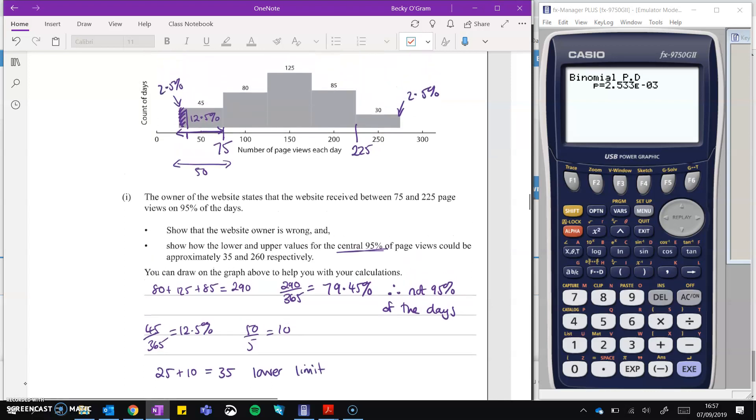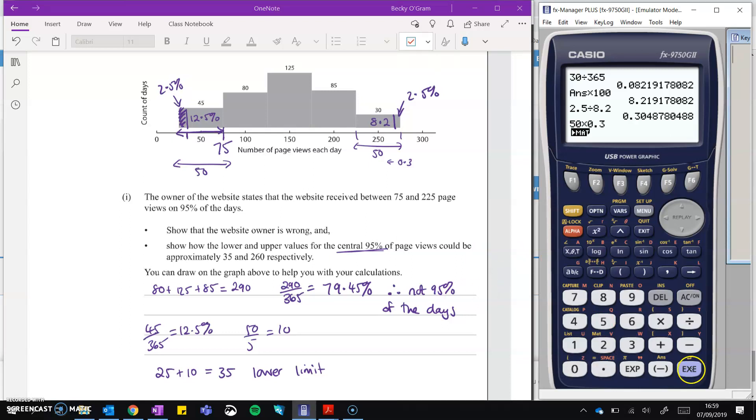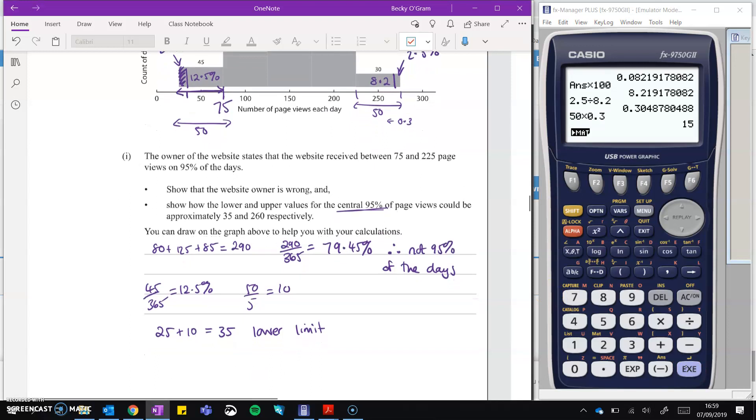We'll go and do a similar thing at the top end. So 30 days out of 365 gives us a percentage of 8.2. So this whole block is worth 8.2. And we want to slice off 2.5% of 8.2. So if we think in proportions again, 2.5 out of 8.2 is roughly 0.3 of that block. So that block goes from 225 up to 275. Again, a distance of 50. And we want to go 0.3 from the end inwards from the top of that. So if we do 50 times by 0.3, we get 15. So then if we do the top of our block is 275, take off that 15, because 50 times 0.3 equals 15, take off that 15, we get 260 as the upper limit.